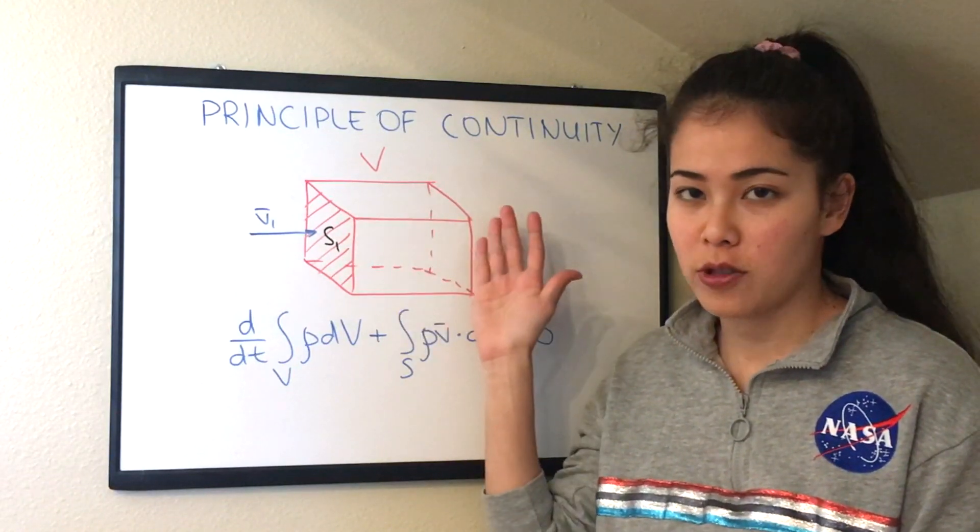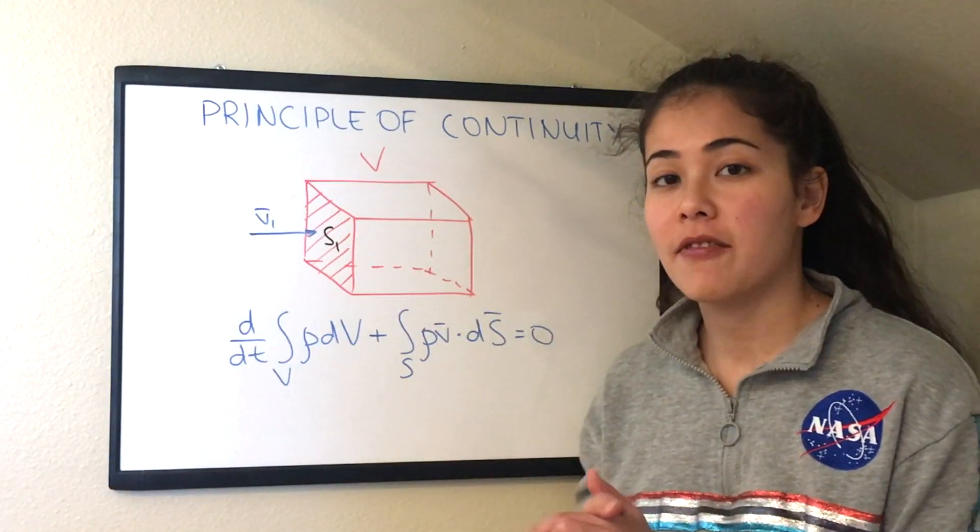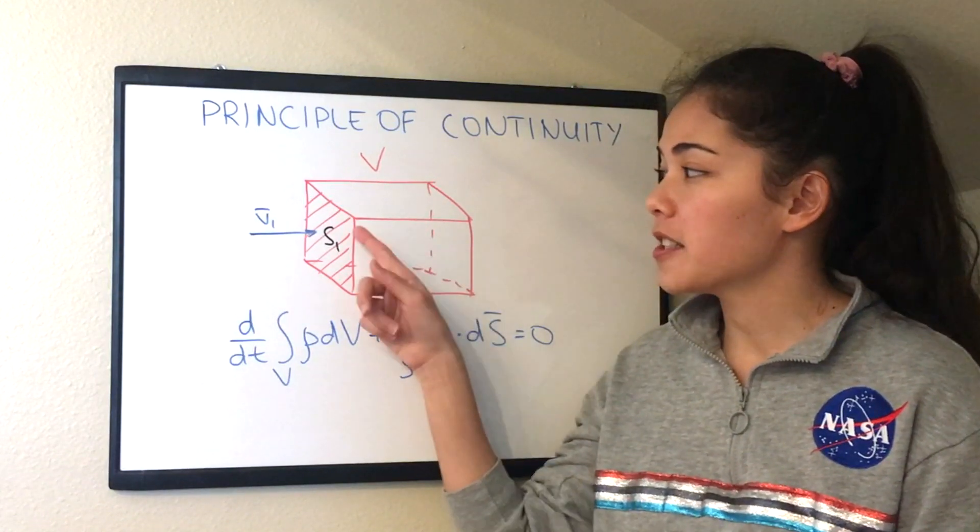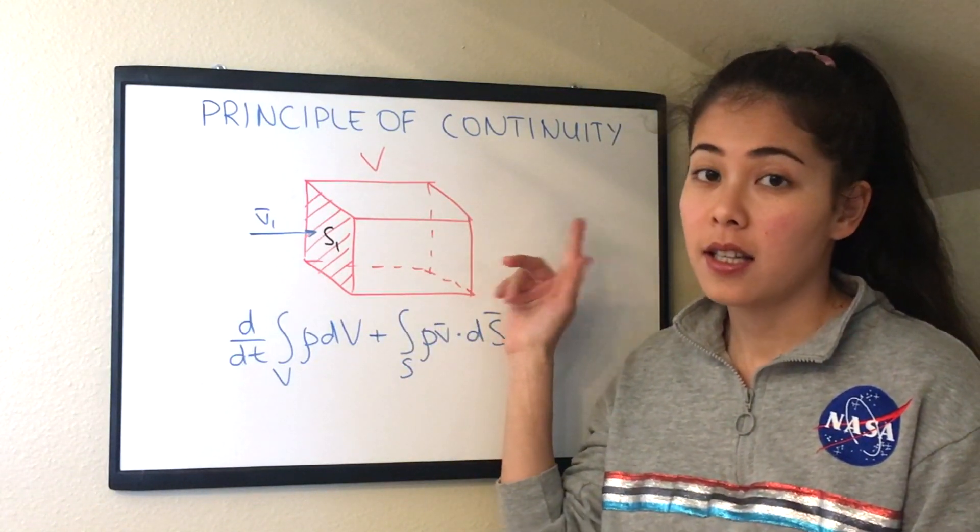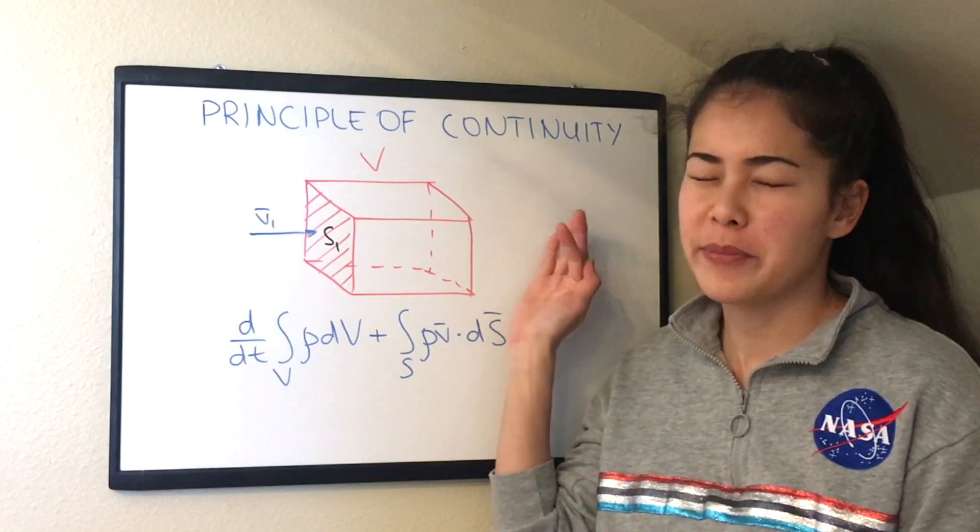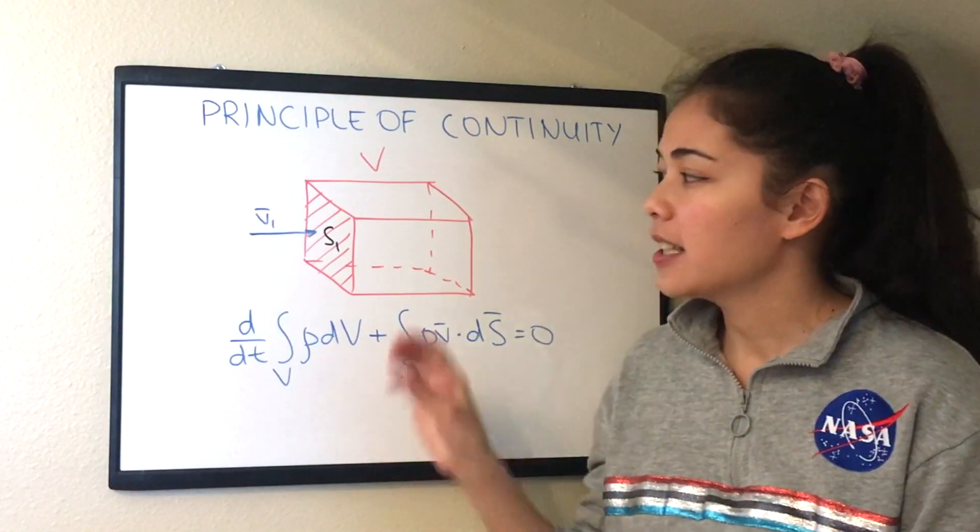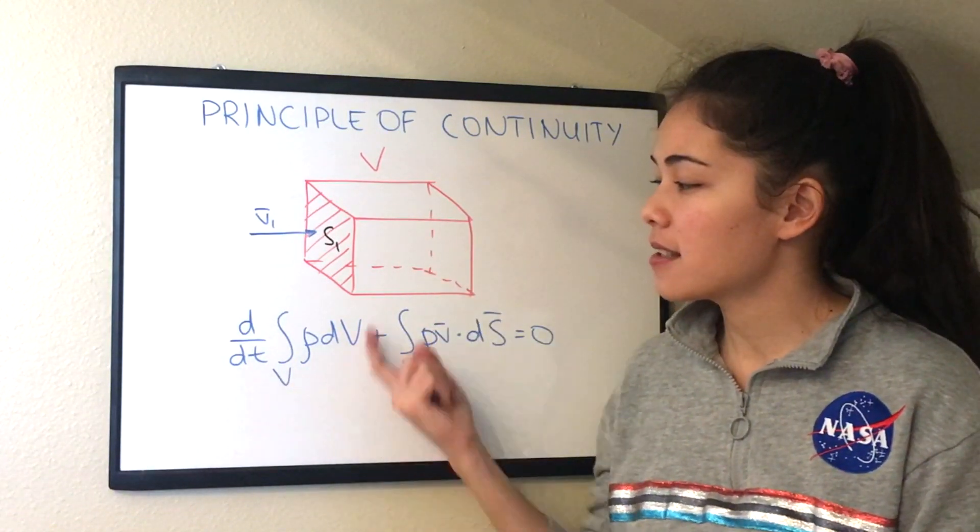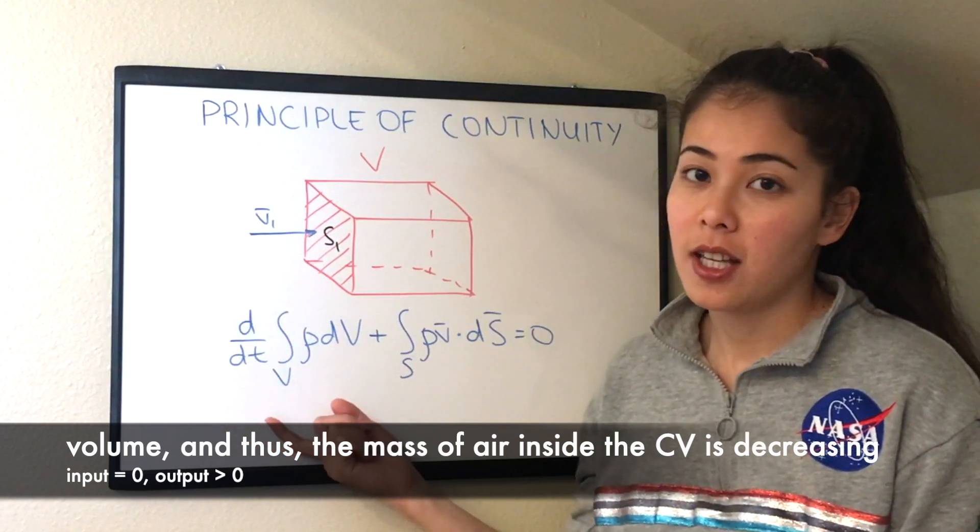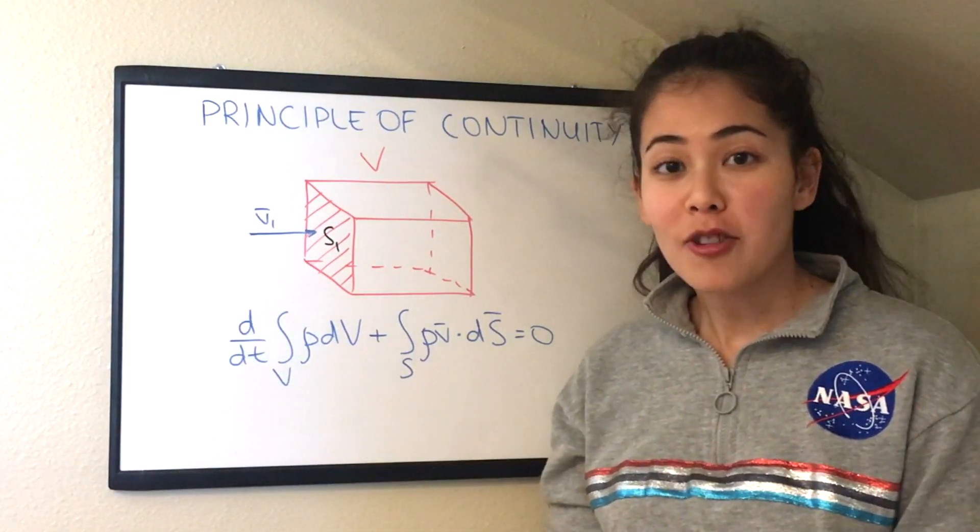We can also have another example when the air continuously exits the box or the control volume or the balloon or air mattress. In that case, the total mass change will be negative because the air is decreasing.